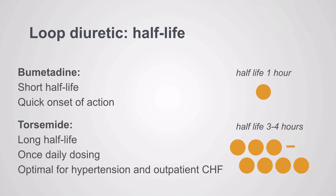The half-life of furosemide is one and a half to two hours. Bumetanide has a shorter half-life of one hour, meaning a very quick onset of action — useful in the ICU. Torsemide, on the other hand, has a longer half-life of three to four hours, allowing once-daily dosing and making it optimal for hypertension and heart failure. Clinical studies have shown you can decrease hospitalization simply by switching patients from furosemide to torsemide, with reductions in hospitalization for heart failure and all causes.